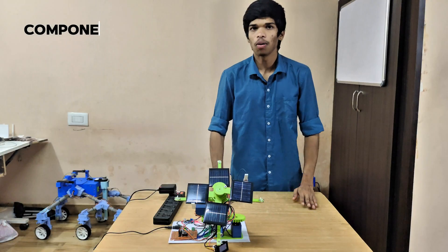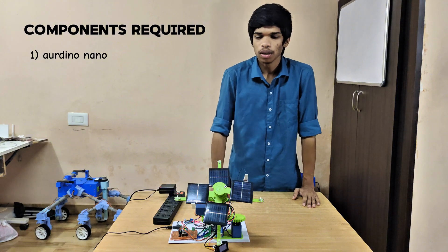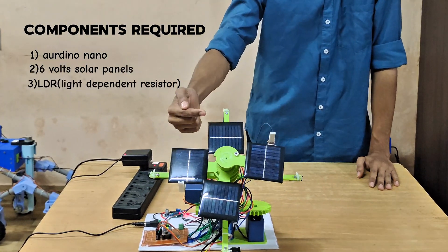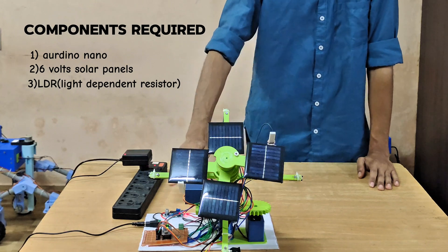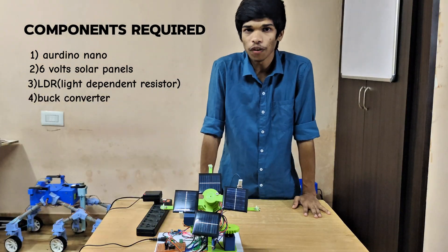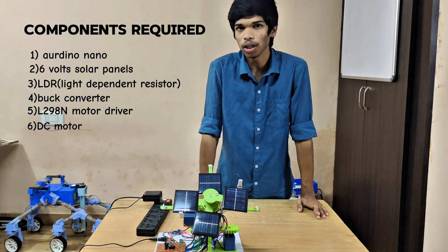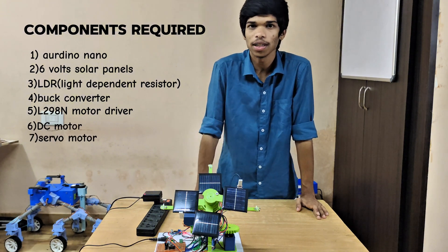What are all the components you'll find? Mainly, Arduino Nano, solar panels - these are all 6V solar panels - and LDR light dependent resistors, buck converter LM2596, L293D motor driver, a DC motor, and MG995 servo motor.